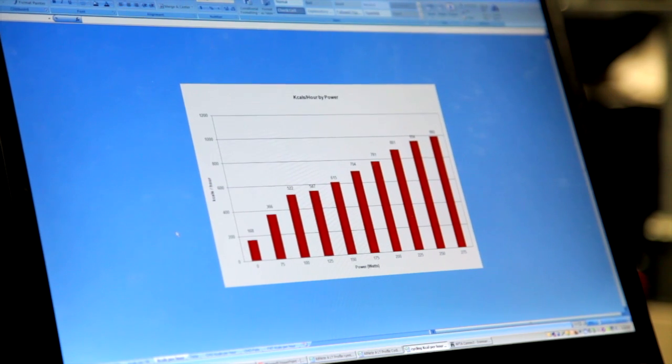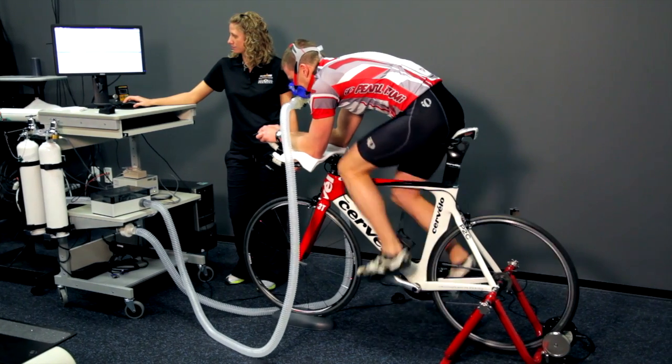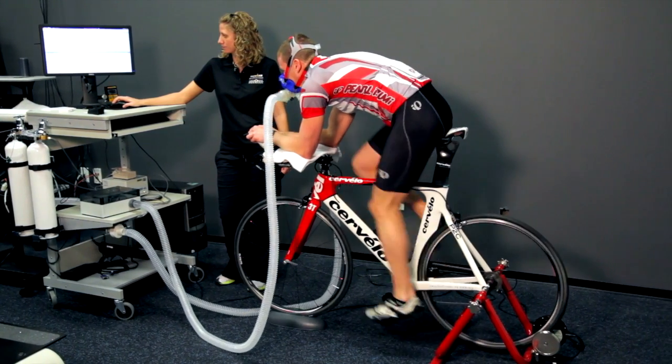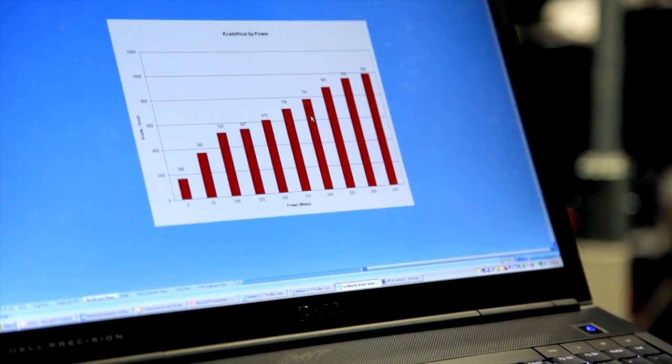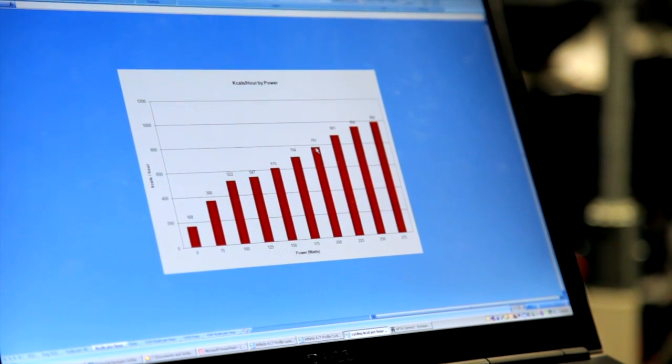Here's the data from a kcal per hour test. We're showing at each one of the wattages that the athlete rode at exactly how many calories they're burning on a per hour basis. So if they go out on a two-hour ride at 200 watts, they're burning almost 800 calories an hour.